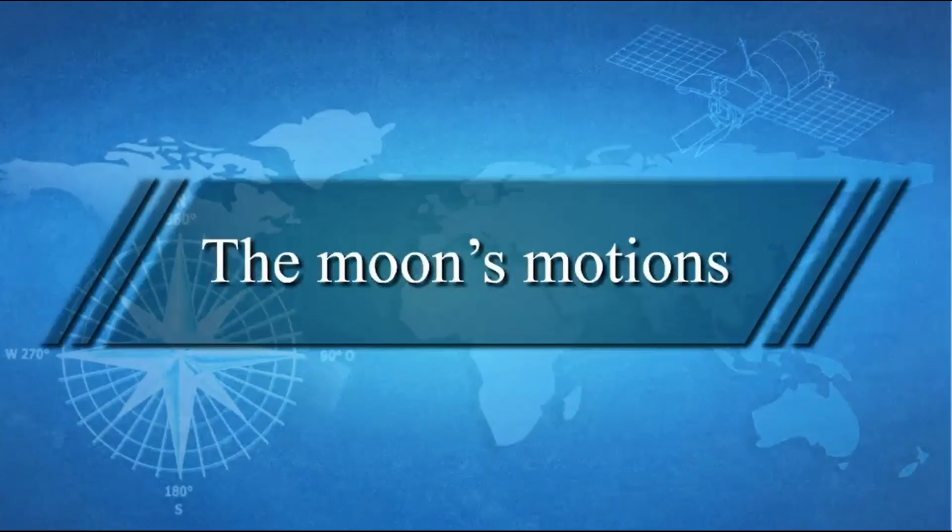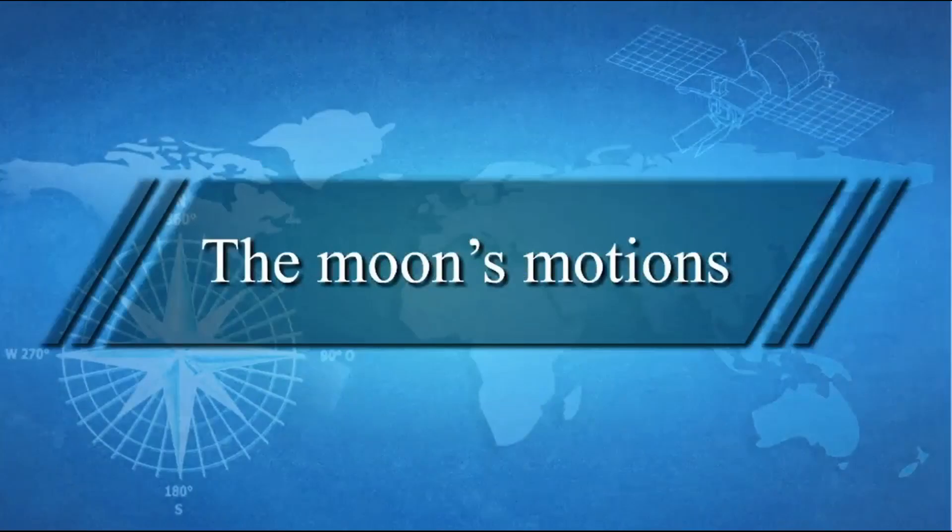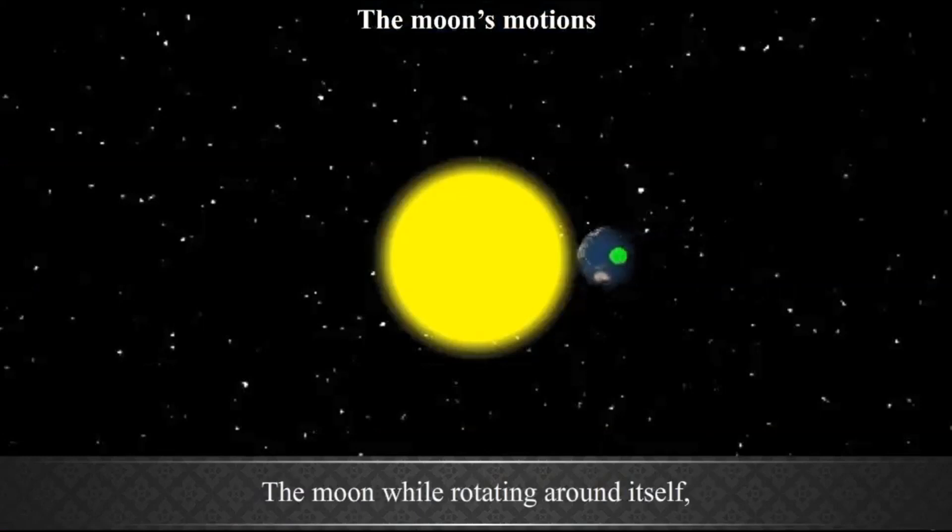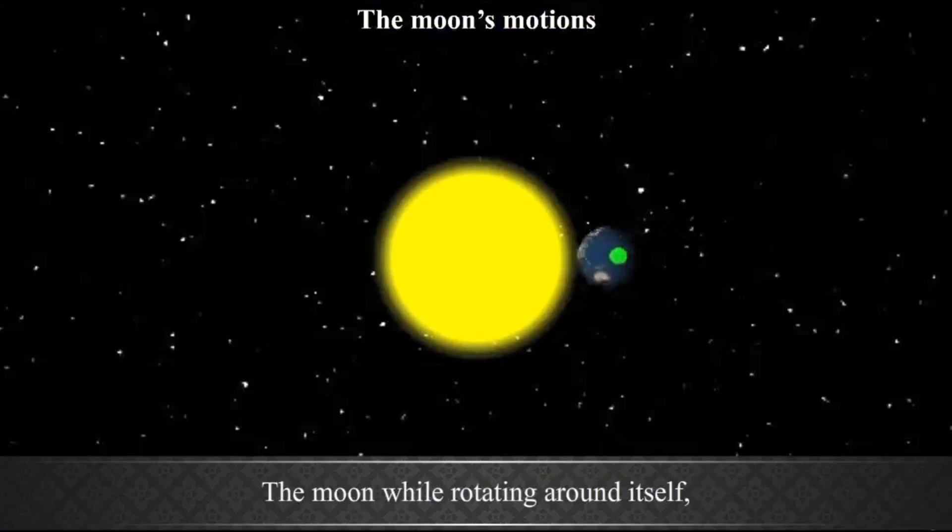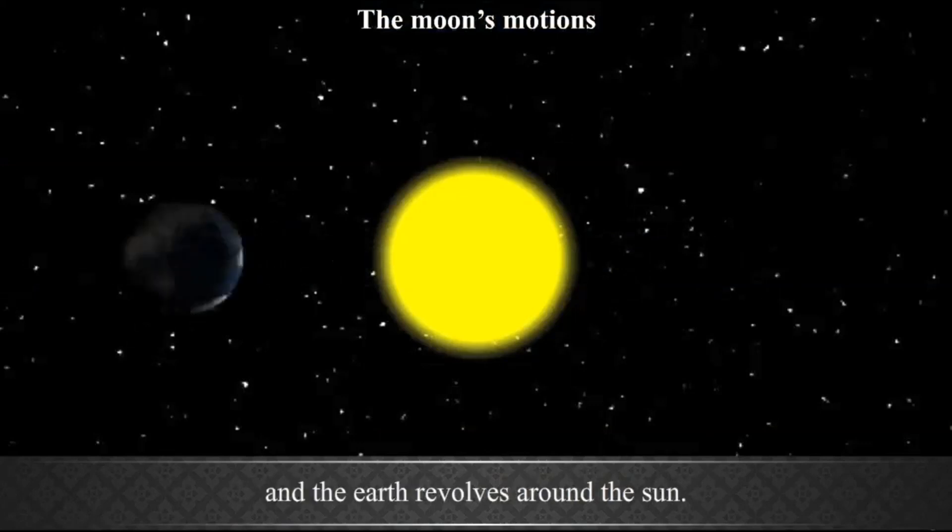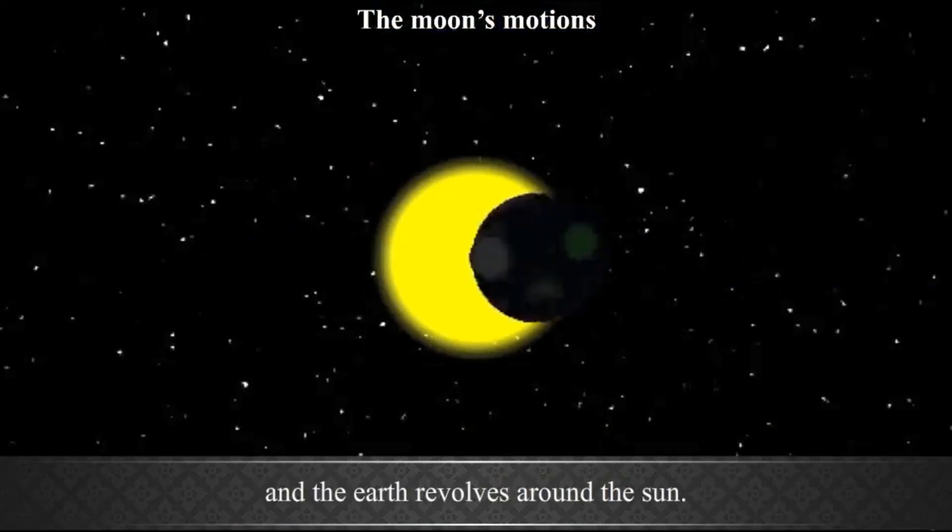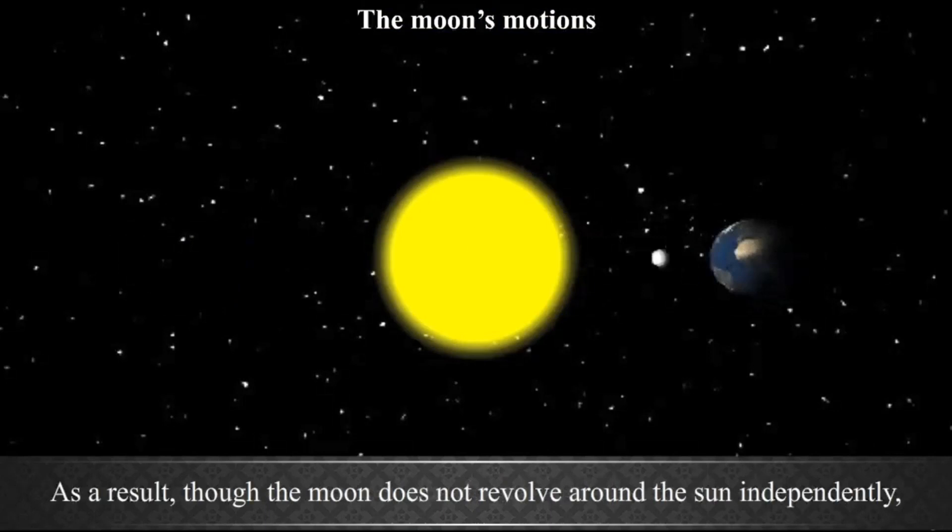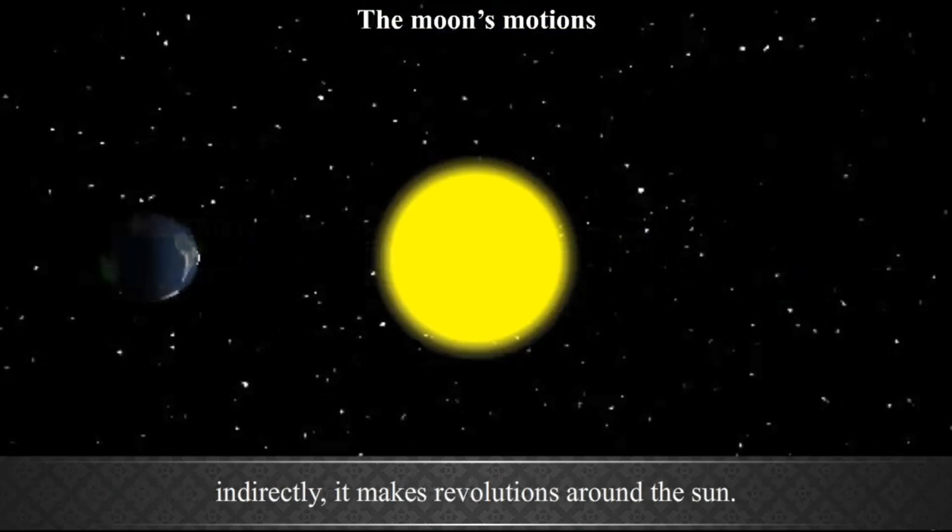The Moon's Motions. Like the Earth, the moon also has axial and orbital motions. The moon, while rotating around itself, revolves around the Earth and the Earth revolves around the Sun. As a result, though the moon does not revolve around the Sun independently, indirectly it makes revolutions around the Sun.